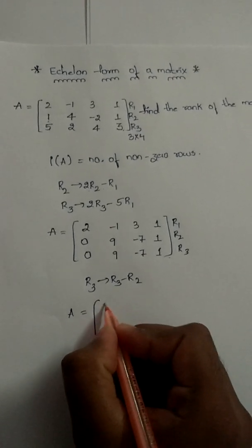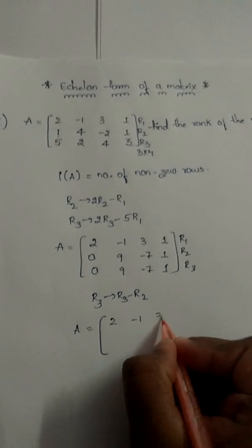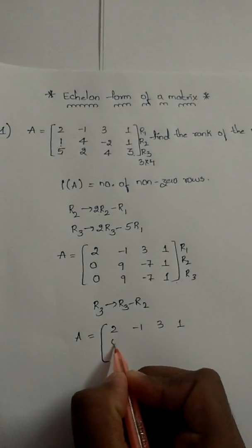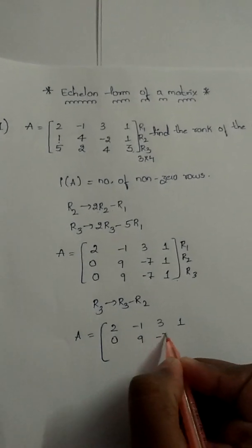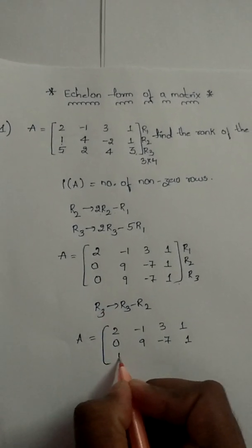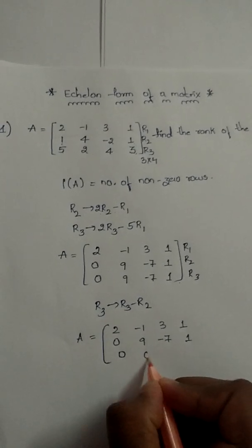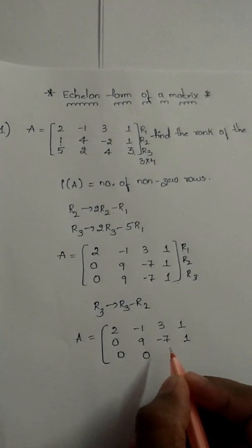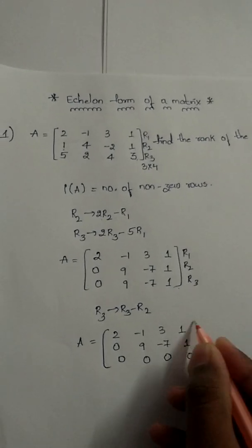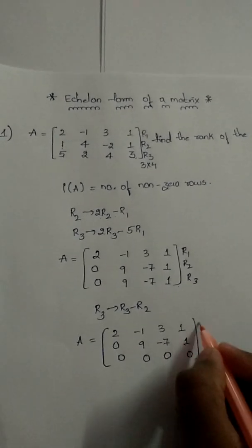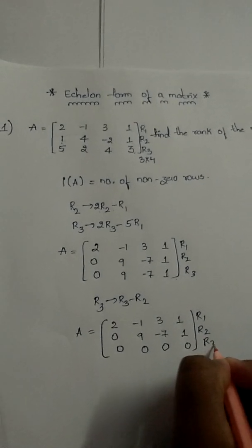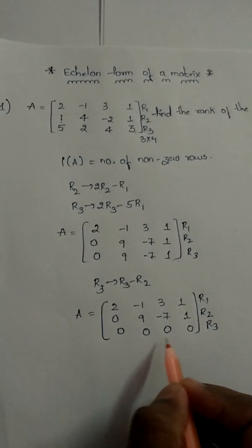We keep R1 and R2 as they are. For R3: 0 − 0 = 0; 9 − 9 = 0; −7 − (−7) = 0; so row three becomes all zeros.